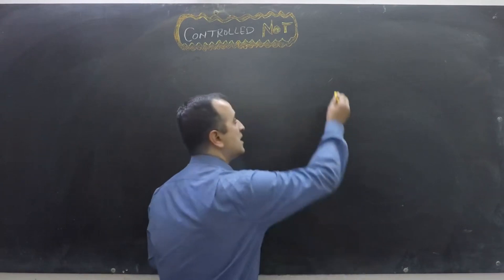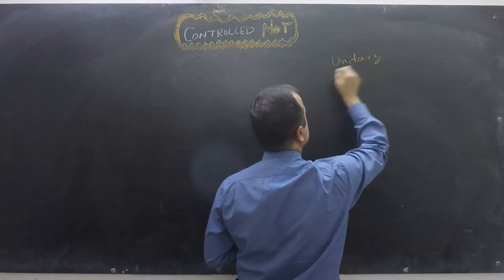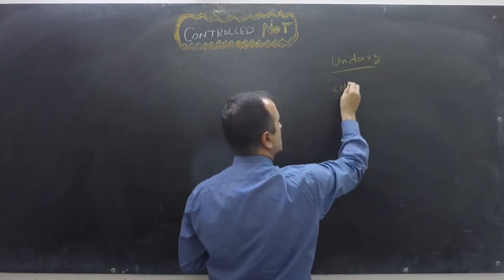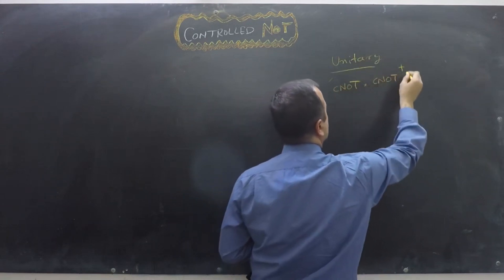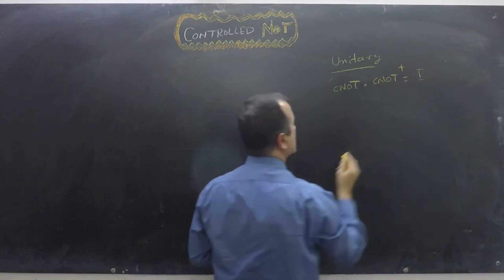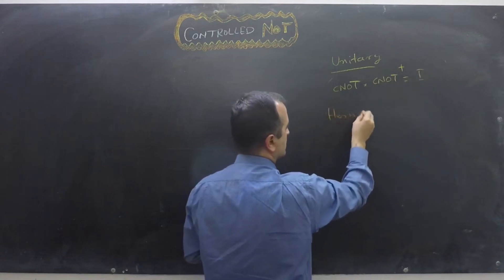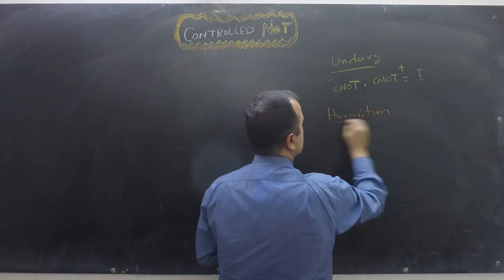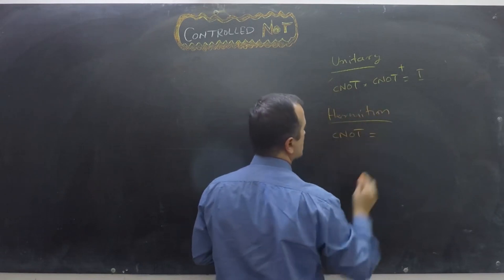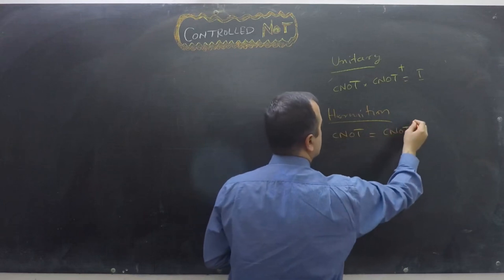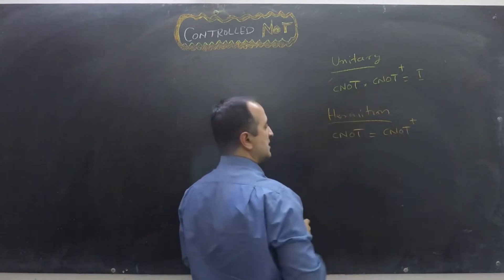Unitary means that CNOT times CNOT conjugate transpose equals identity. Hermitian means that CNOT equals its own conjugate transpose. In the unitary case the conjugate transpose is the inverse, whereas in the Hermitian case the conjugate transpose equals the original gate.